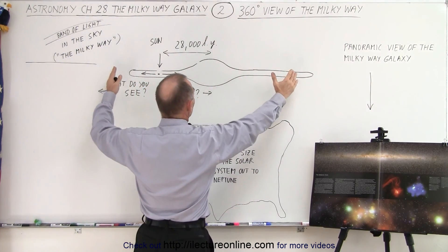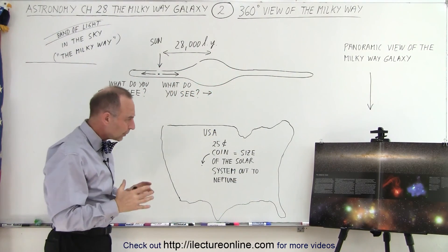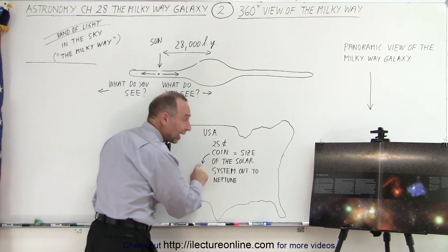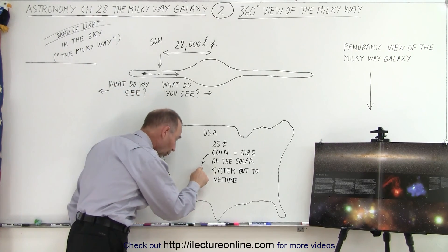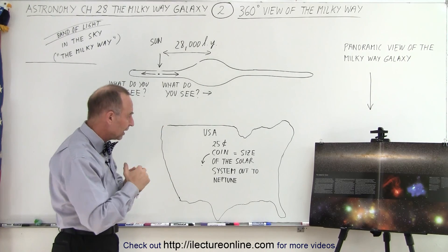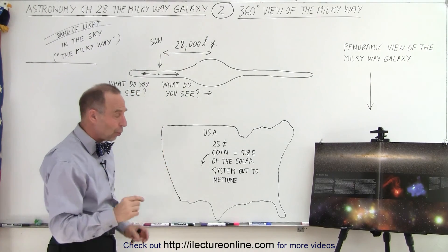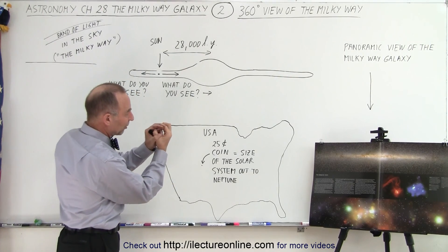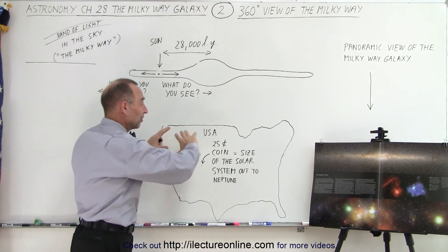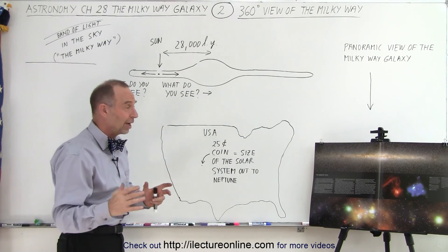To give you an idea of how large our galaxy is: let's assume the galactic disk is the size of the United States. If we go somewhere in the middle and place a quarter on the road, our solar system out to the orbit of Neptune would fit on that 25-cent coin. So that coin represents our solar system, and the size of the United States represents the rest of the Milky Way galaxy.